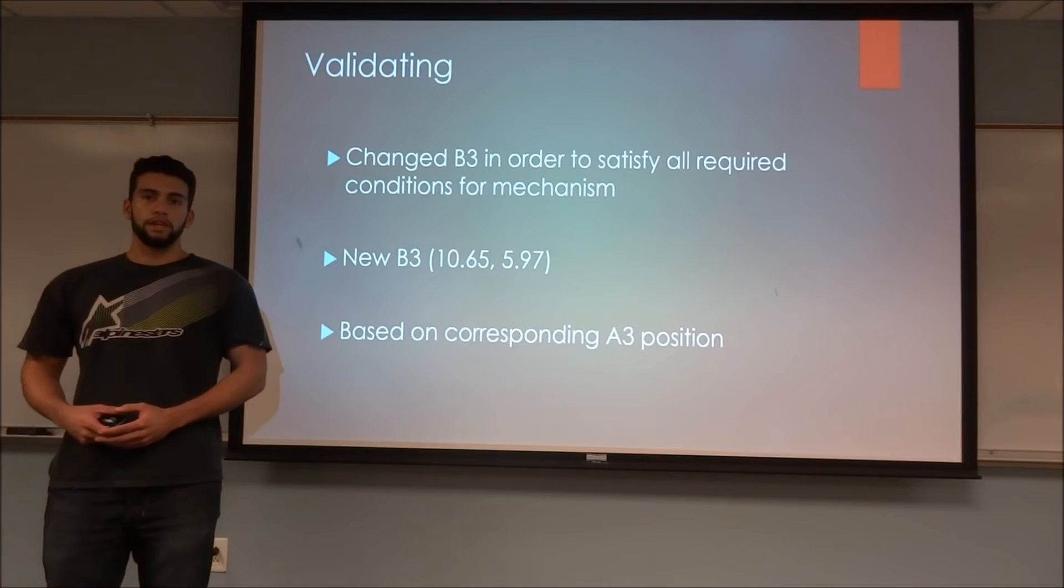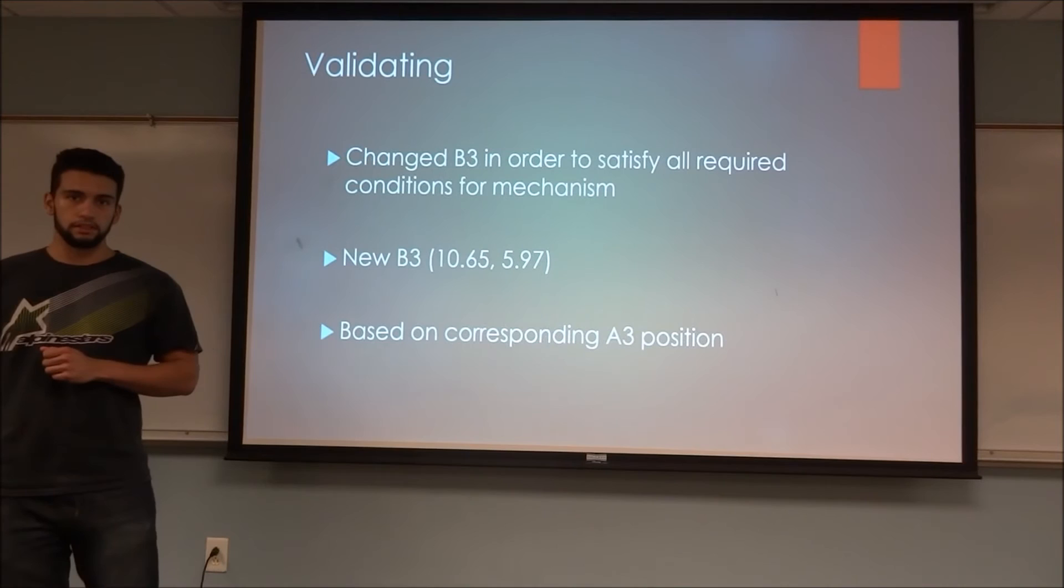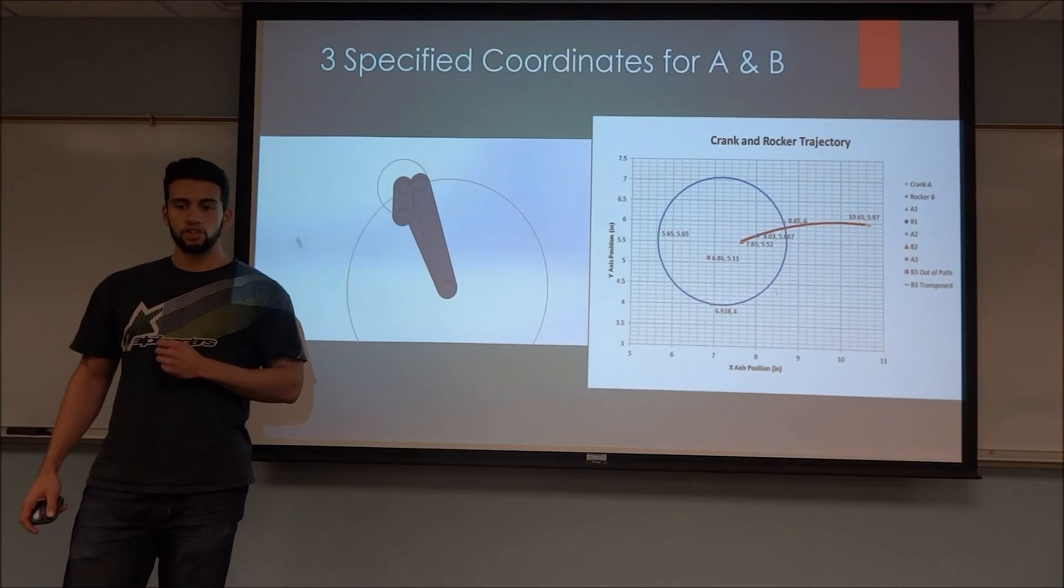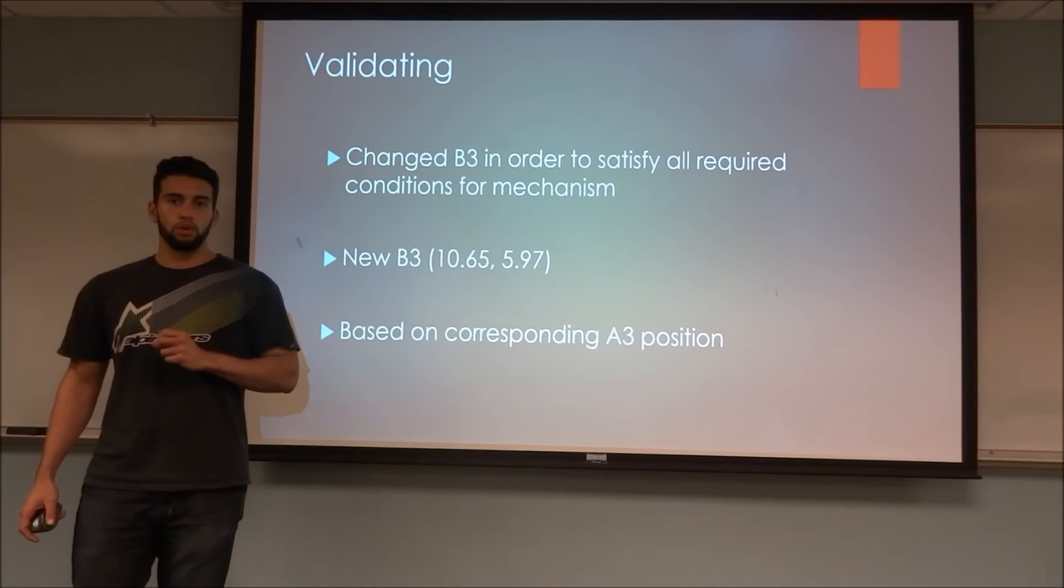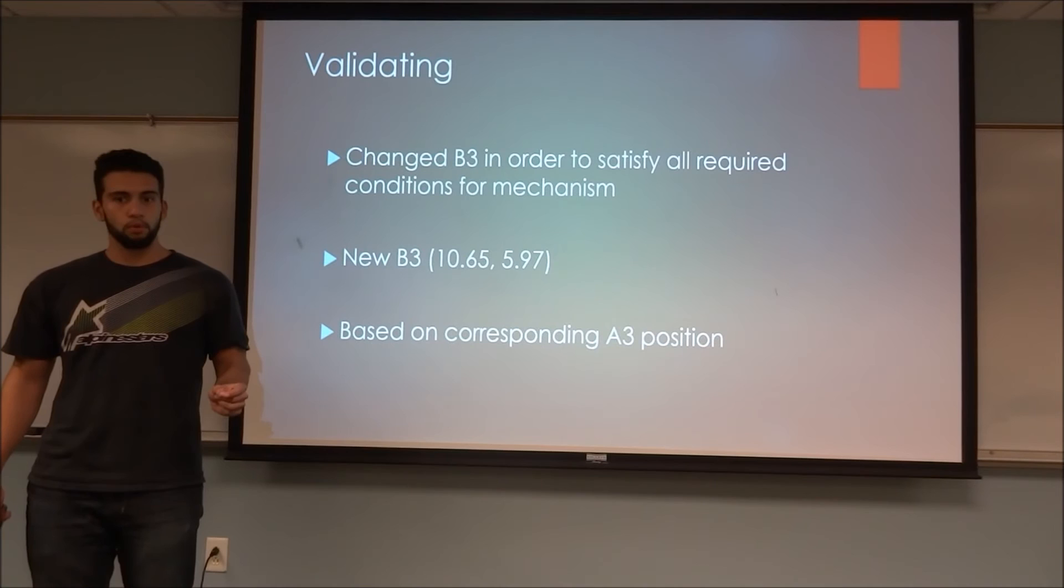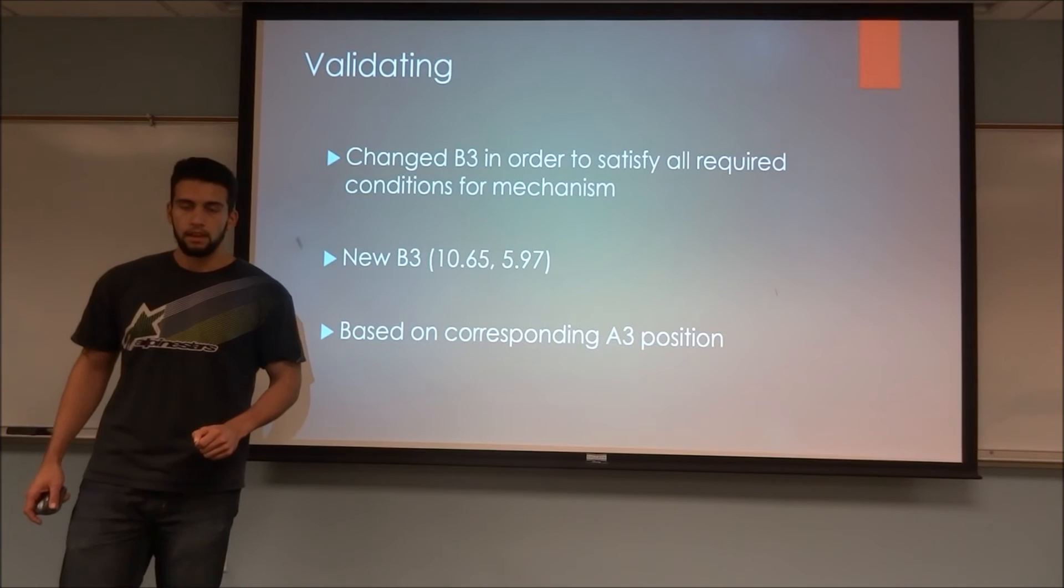In order to perform our validation, we used SOLIDWORKS. We did this by actually rotating the mechanism a full 360 degrees. In doing so, with Excel spreadsheets, we also were able to determine that B three was in fact not working for our mechanism.